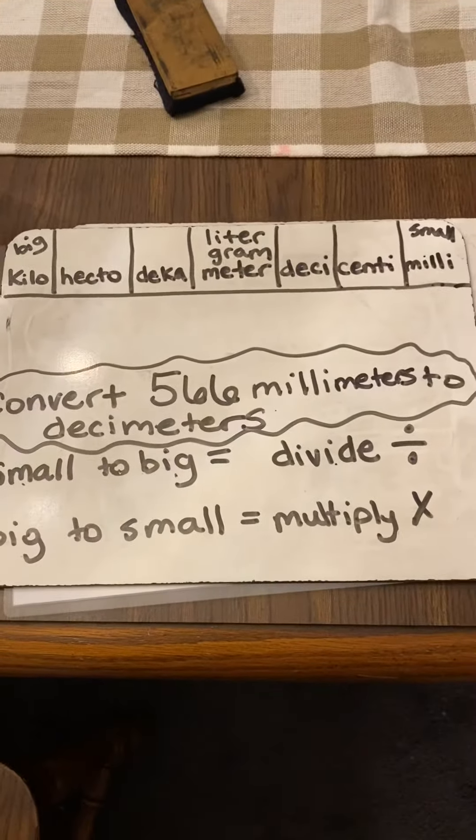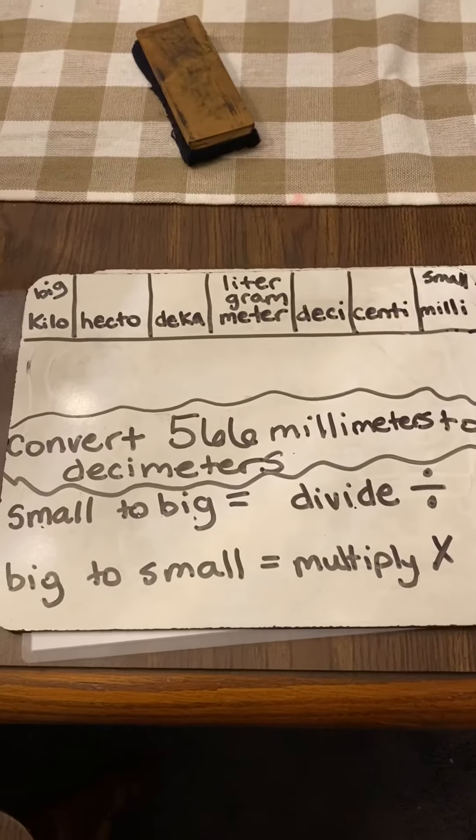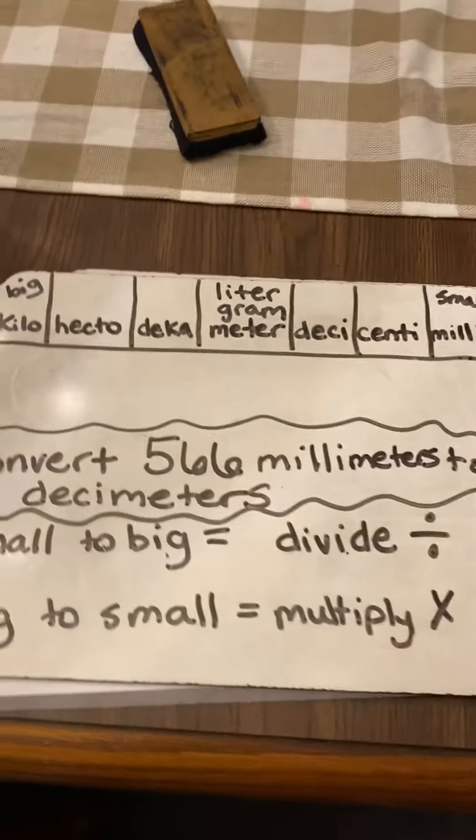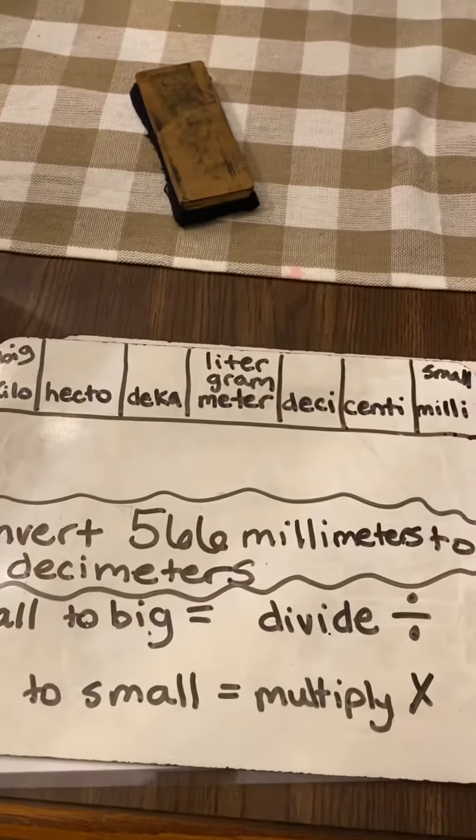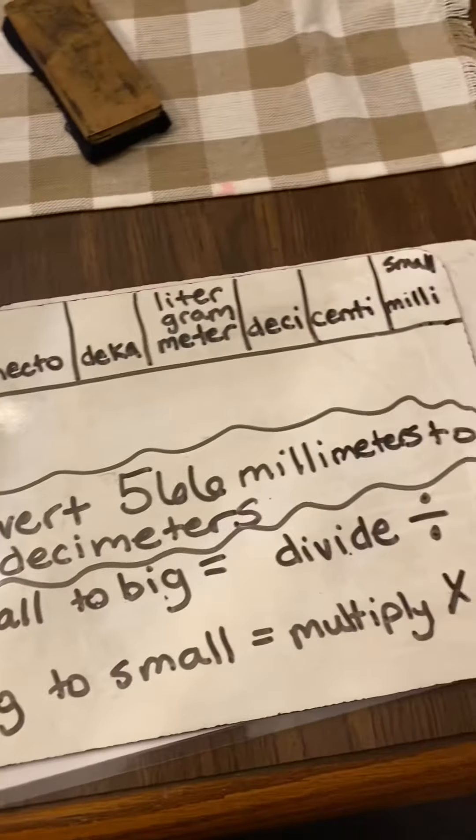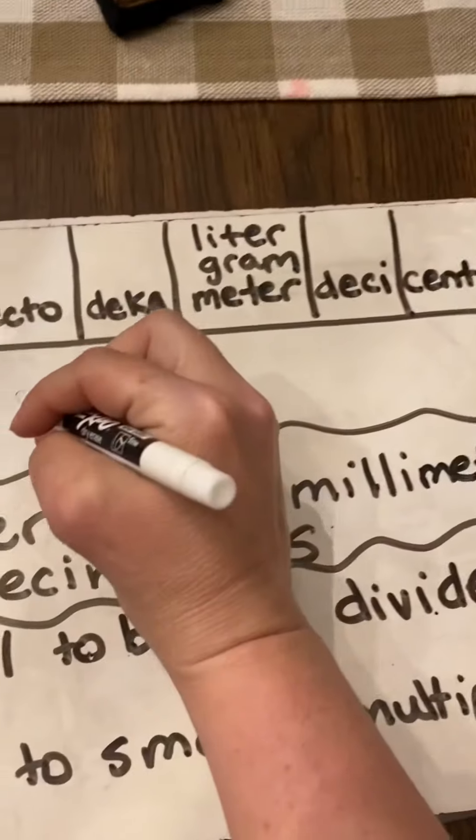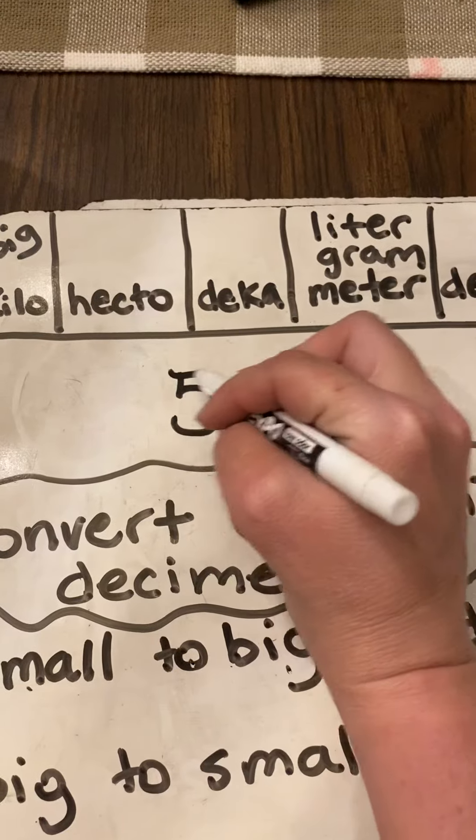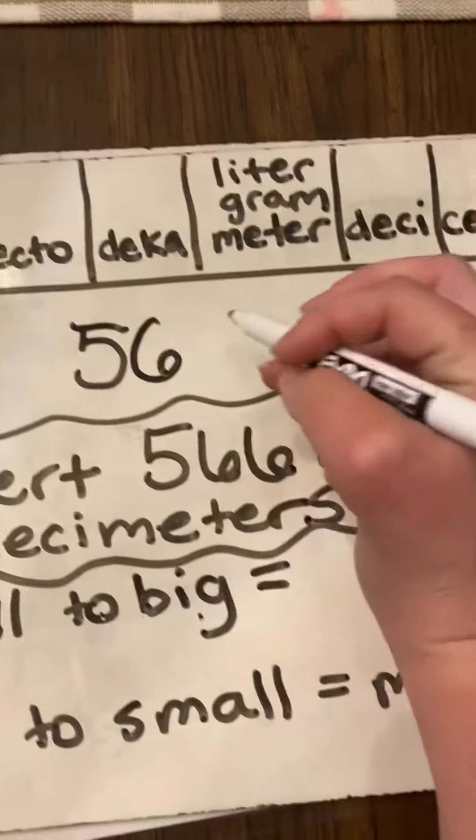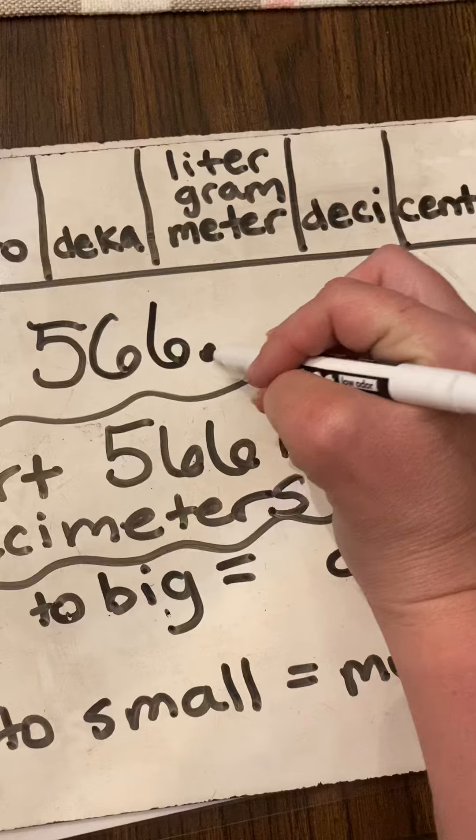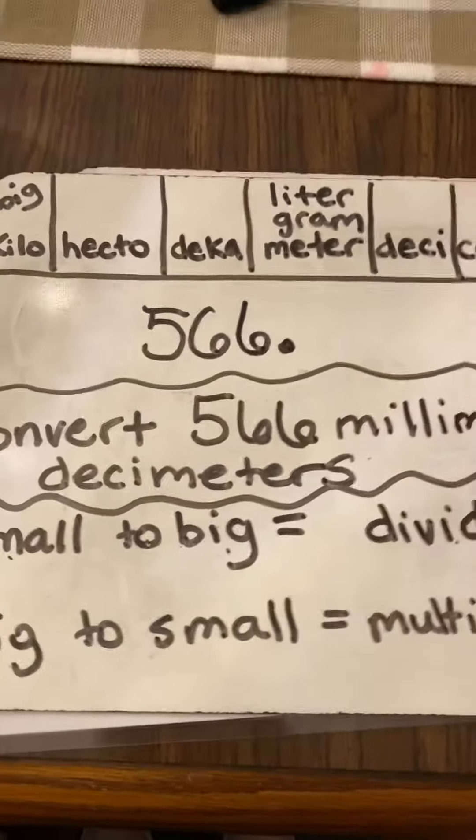And the easy way to do that is to just shift the decimal. So, let's take a look at this number, 566. So, I am going to write 566. And we know that that is where the decimal is.